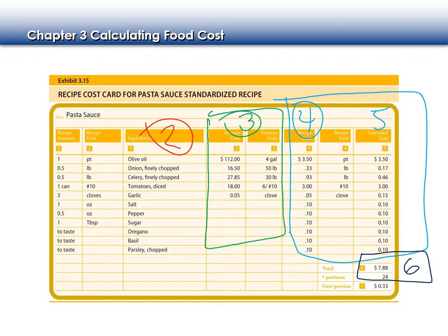Let's look at olive oil. Are the recipe units and as-purchased units the same? The recipe calls for 1 pint; the as-purchased unit is 4 gallons. So we start with 4 gallons. The cost for 4 gallons is $112. Write: $112 divided by 4 gallons, which gives us $28 per gallon.